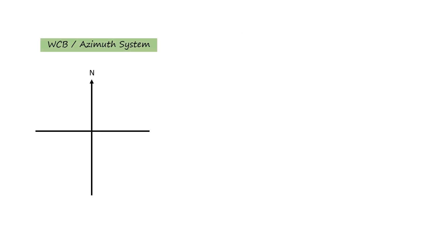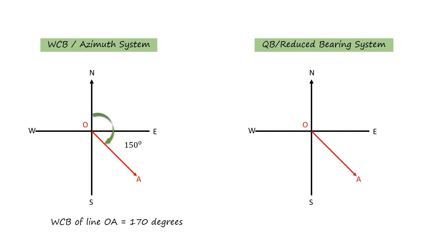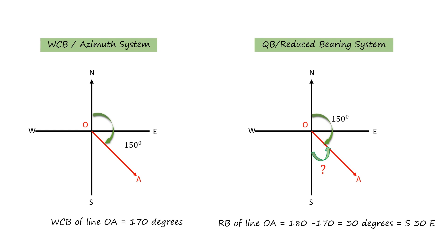To summarize, as shown in the figure, the azimuth of line OA as per the WCB system is 150 degrees, but the reduced bearing value as per the QB system is 30 degrees, designated as S30E — south 30 degrees east.